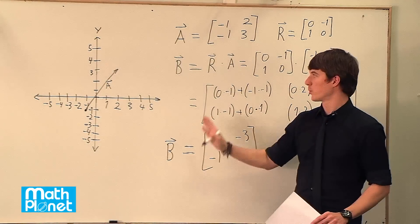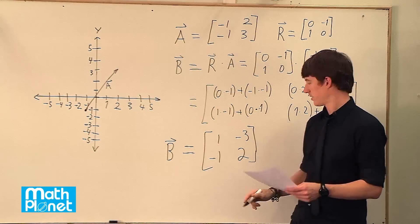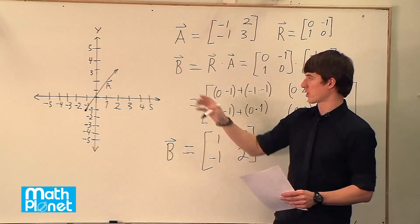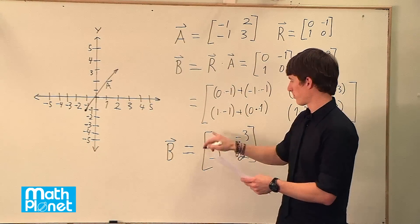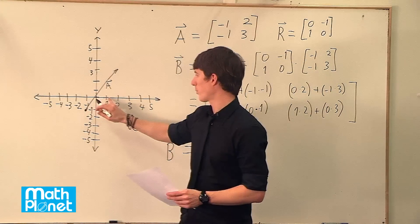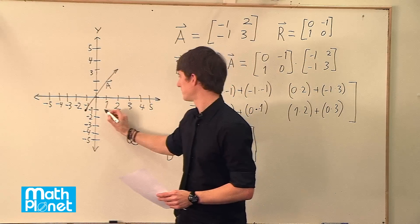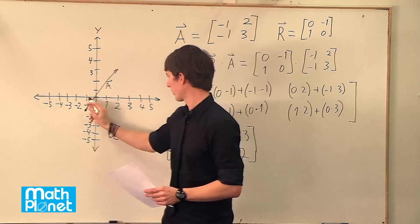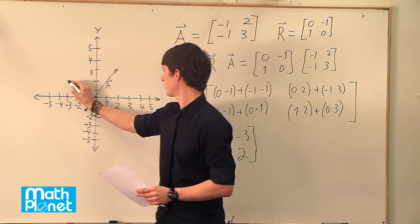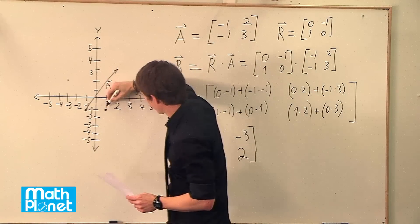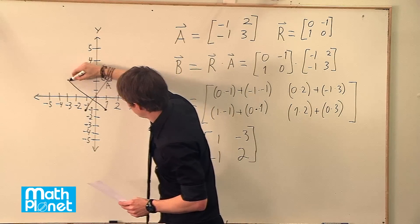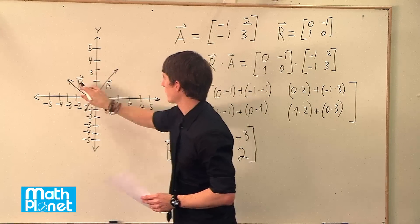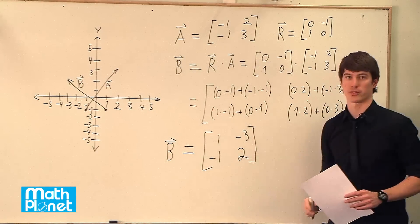Great. So we found B, which is A rotated 90 degrees, and here's the matrix form of that. Let's draw it. This is the point 1, negative 1. So we go to the right 1 and down 1. And then we have negative 3, 2. So to the left 3 and then up 2. So we can draw our vector by connecting it, pointing it in that direction. So here is B graphically, and here's the matrix for vector B.